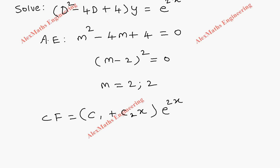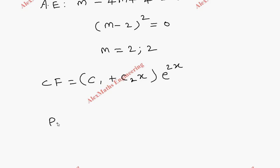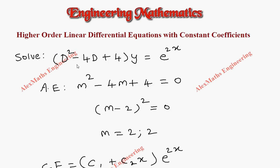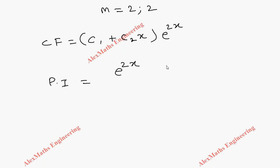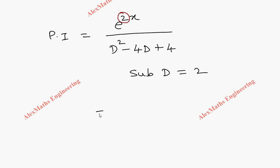Now coming to particular integral, we have to write the function e^(2x), which is on the right-hand side, in division by D² - 4D + 4. As per the procedure, whatever number is here, that is a, we substitute D = 2.